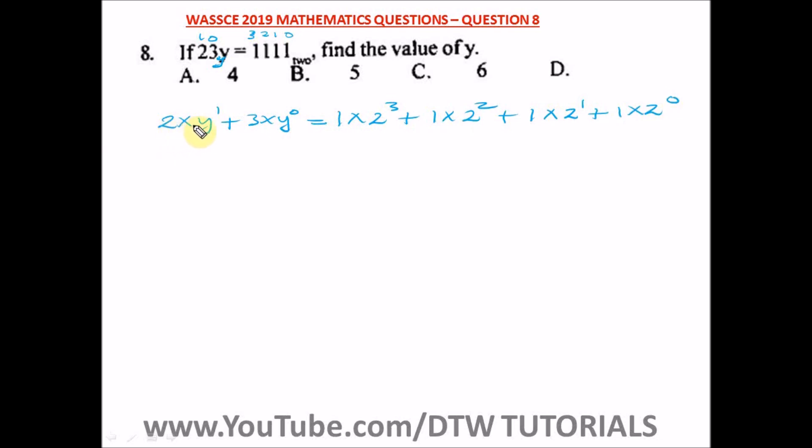From here, we have 2 times y raised to the power 1. Y raised to the power 1 is still y, and y times 2 will give us 2y, plus what is y raised to the power 0? Anything raised to the power 0 is 1, and 1 times 3 will give us 3.